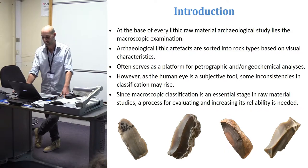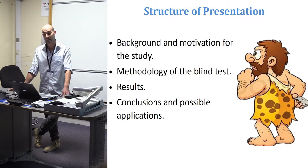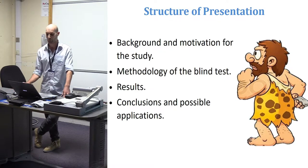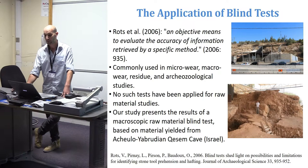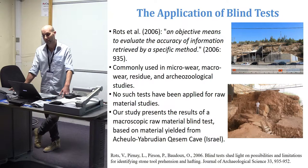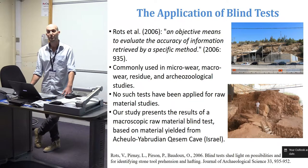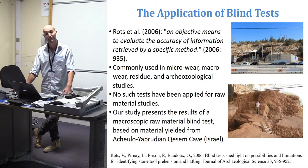Since macroscopic classification is an essential stage in raw material studies, a process for evaluating and increasing its reliability is needed. We hope our blind test answers that need. Roths and colleagues define blind tests as an objective means to evaluate the accuracy of information retrieved by a specific method. Blind tests are commonly used in microwear, macrowear, residue, and archaeozoological studies. However, until now, no such tests have been applied to raw material analysis.